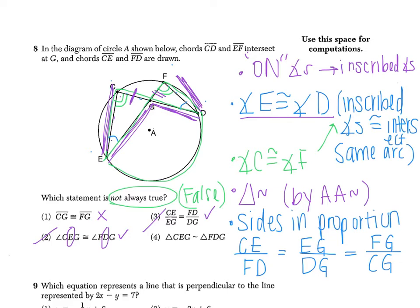And the next choice, number four, says triangle CEG is similar to triangle FDG. And we knew that that was a true statement based off of the fact that we had two pairs of congruent angles. So this is true, which means it's not our choice. So we end up choosing choice one here.